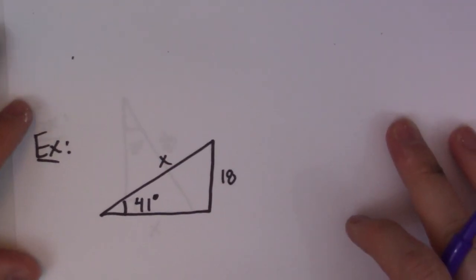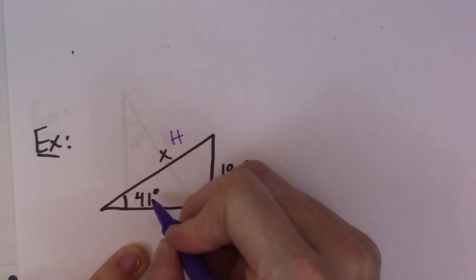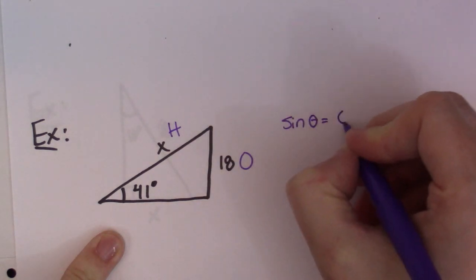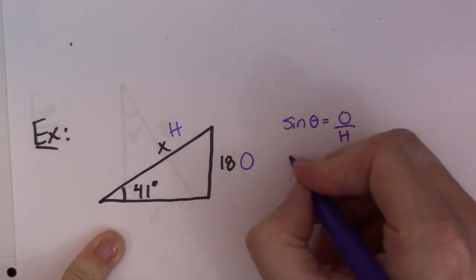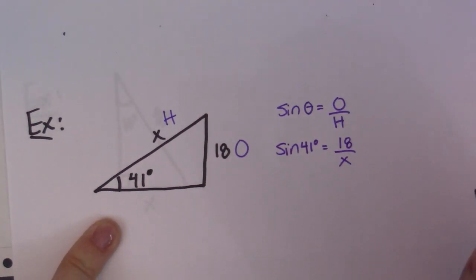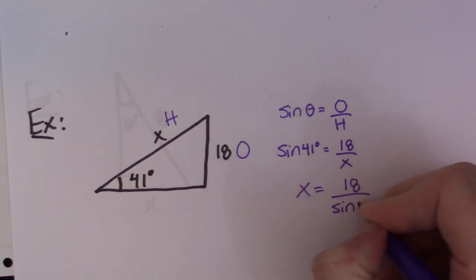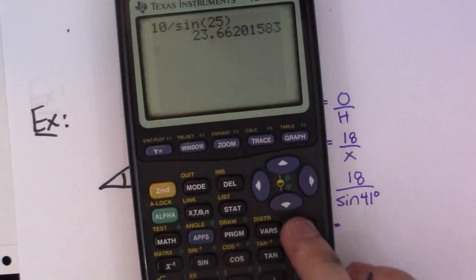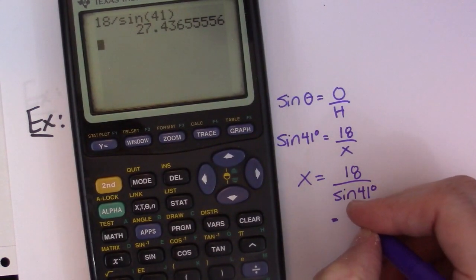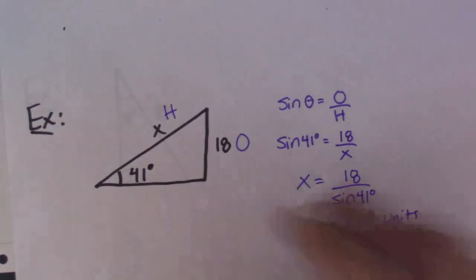Let's try a very similar question. We have the opposite side given, we're looking for the hypotenuse, and we're given an angle of 41 degrees. Setting it up: sine 41 degrees equals 18 over X. Pull the old switcheroo — X equals 18 over sine 41. Taking the calculator, 18 divided by sine 41 gives 27.4 units. That's the length of that side.